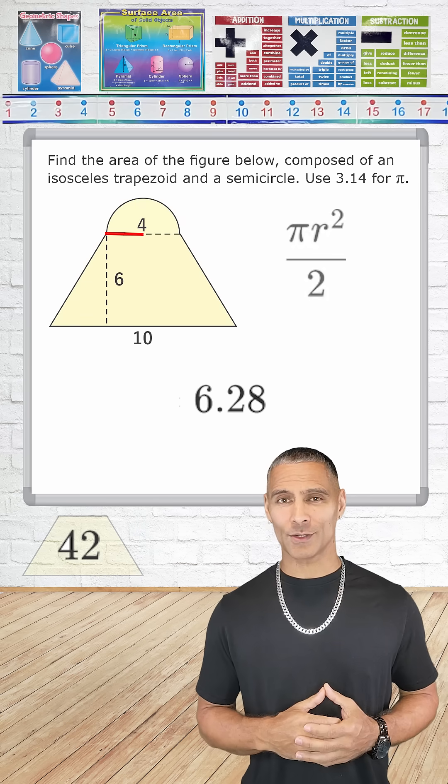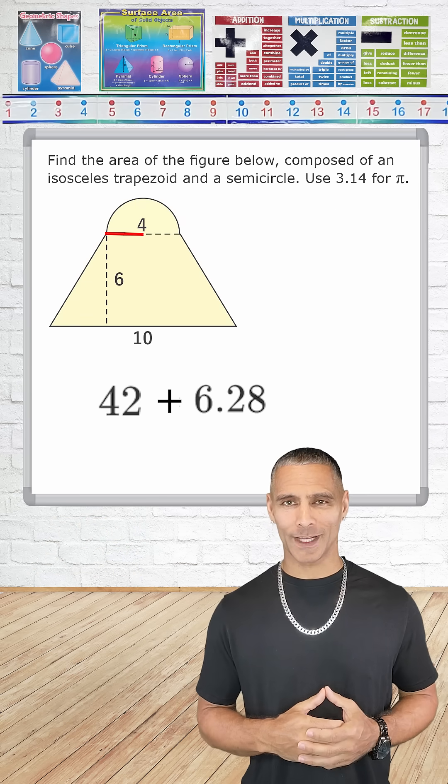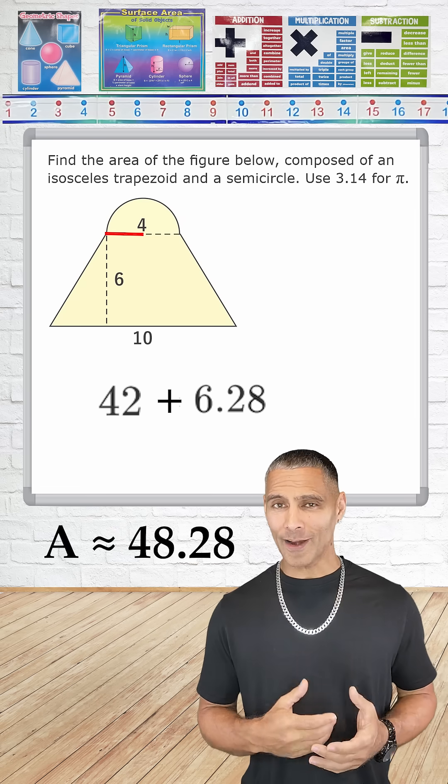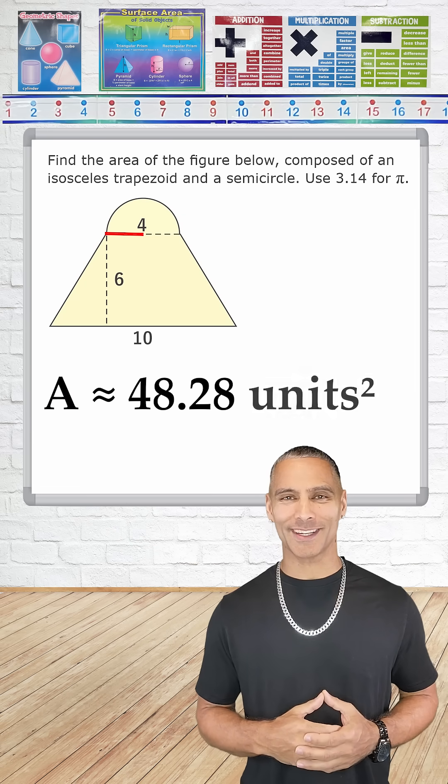What we have to do now is just add the two areas together. 42 and 6.28 is 48.28. So the area of the composite shape is approximately 48.28 square units.